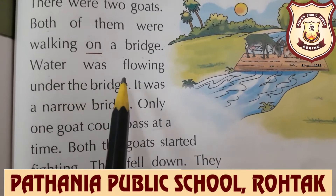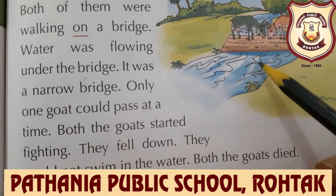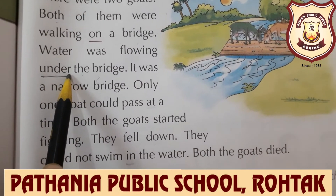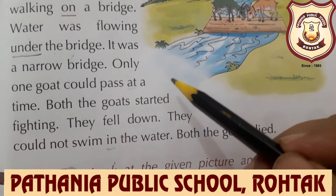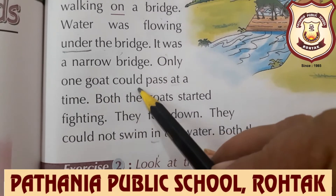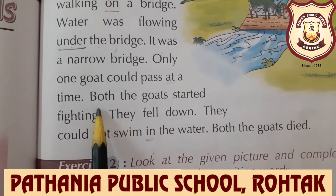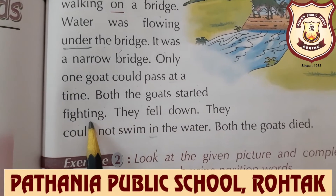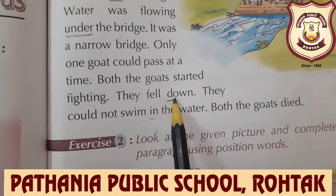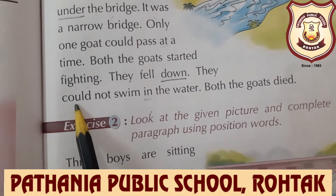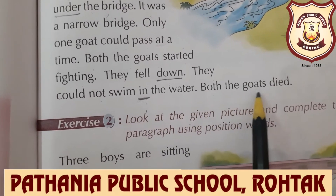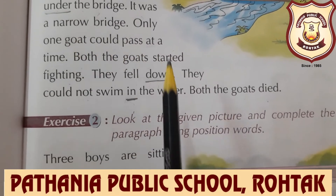'It was a narrow bridge. Only one goat could pass at a time. Both the goats started fighting. They fell down.' 'Down' is also a position word. 'They could not swim in water.' 'In' is also a position word. 'Both the goats died.' That was the story and we have underlined the position words: on, under, down, and in.